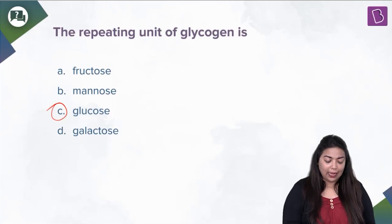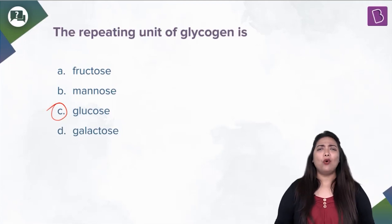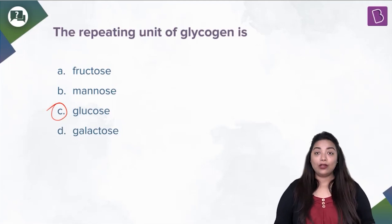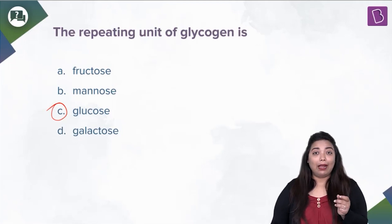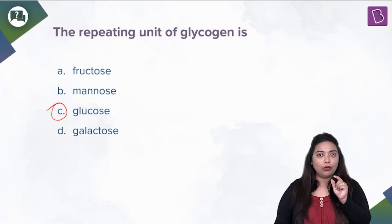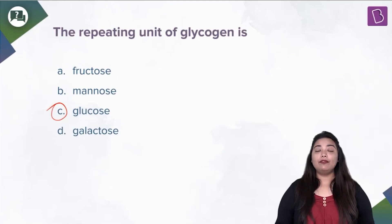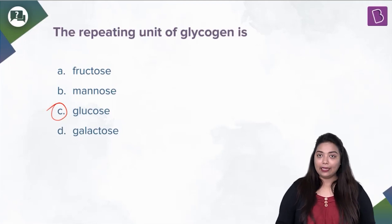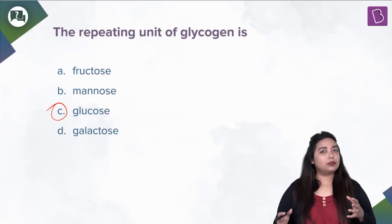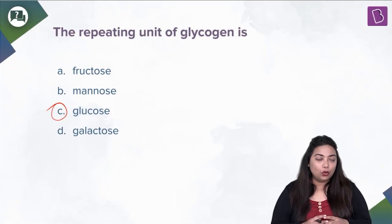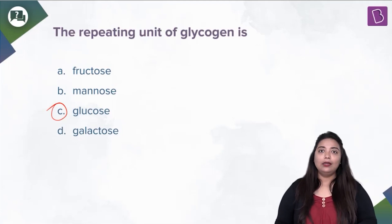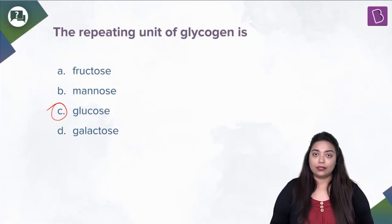Fructose, mannose, galactose — these are also sugars. Fructose is generally found in fruits, mannose is found in some apples and peaches, and even human plasma has a little bit of mannose. Galactose combines with glucose to give the milk sugar lactose. So these are all types of sugars.